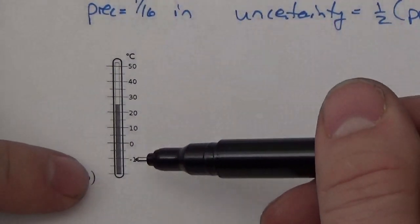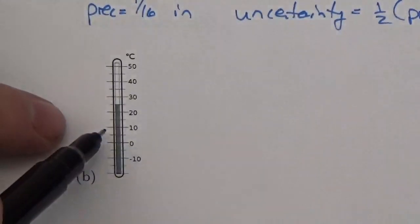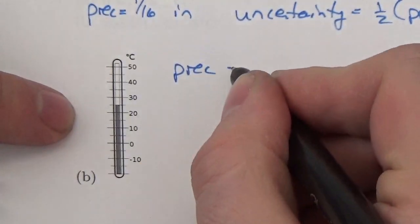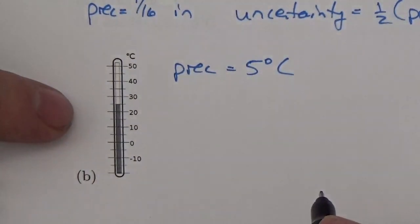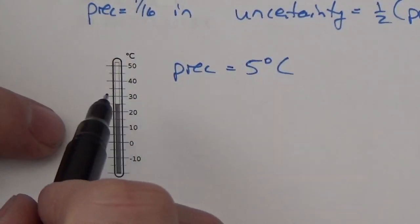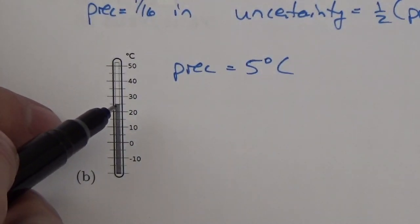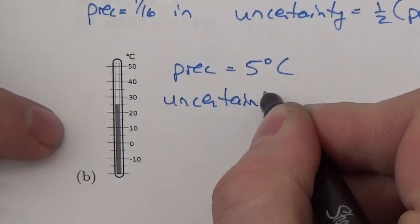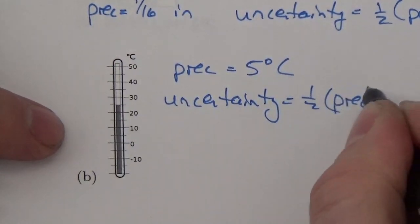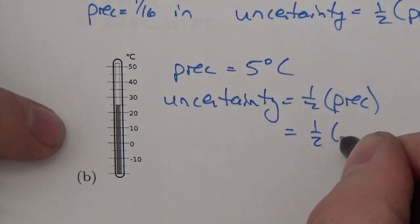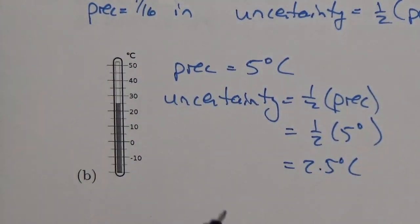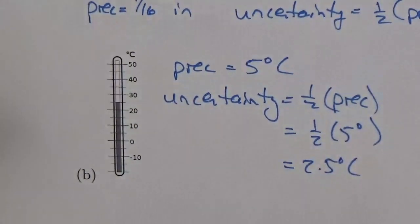This is a thermometer, and looking at the marks: 10 degrees Celsius, then another tick mark, then 20 degrees. So the smallest tick mark increment is five degrees — that's my precision. The uncertainty is half the precision, which means half of five degrees, or 2.5 degrees Celsius. So any time I make a measurement here, it's going to be good give or take 2.5 degrees Celsius.